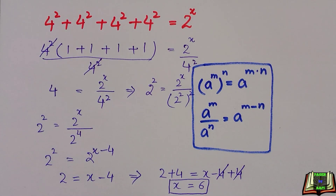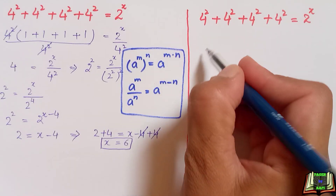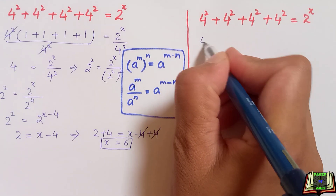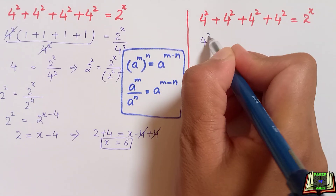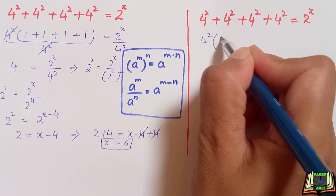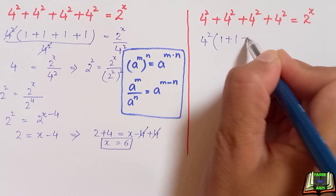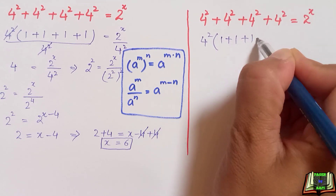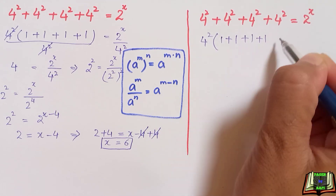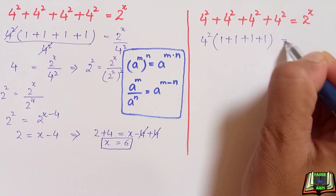Now we are going to try another method. If you have any method to solve and find the value of x, please write it in the comment box. Here we are going to take 4 raised to power 2 as common and inside the parenthesis we have 1 plus 1 plus 1 plus 1.